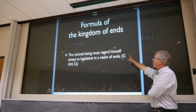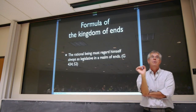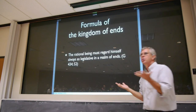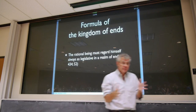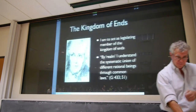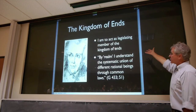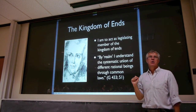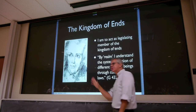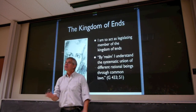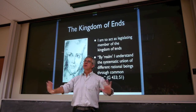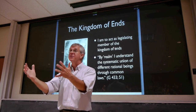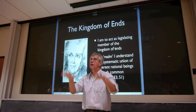A rational being must regard himself always as legislative in a realm or kingdom of ends, he says. The kingdom of ends is a situation where everybody treats everyone else with respect, obeys the moral law. What does he mean by this realm or kingdom? The systematic union of different rational beings through common laws. But what is this systematic union, this respect for other beings? Is it merely that I leave them alone? That accords nicely with Locke's bottom-up picture. Or is it one where I actually take on their ends and we all share the same ends — the ends of the state? That's Rousseau's top-down picture.